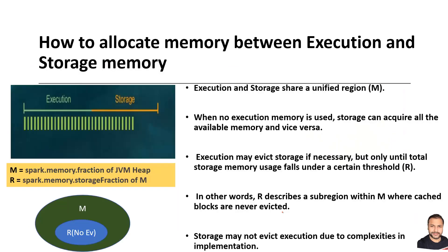There is a unified view of execution and storage memory. If there is no execution happening, storage memory can grab all the space, and same for execution memory — if there is no storage, it can grab all the space. However, execution memory has one special power where it can evict storage memory blocks if it hits a threshold. The algorithm used to evict those blocks is LRU — least recently used blocks are removed from storage and spilled to disk.